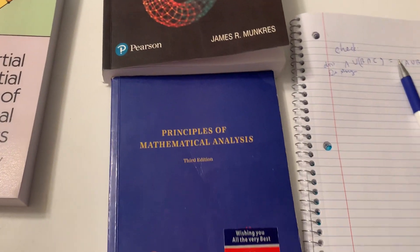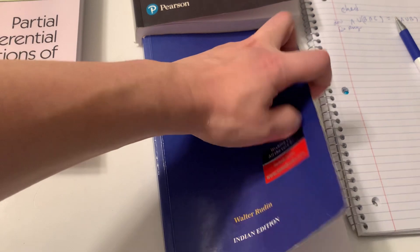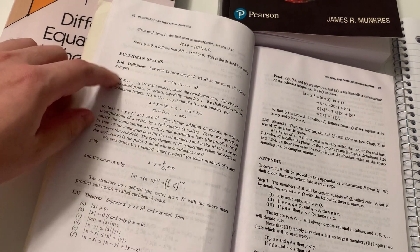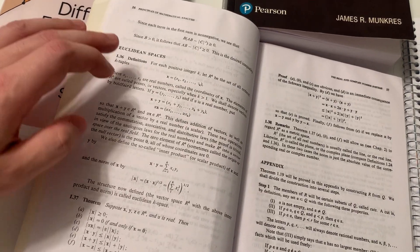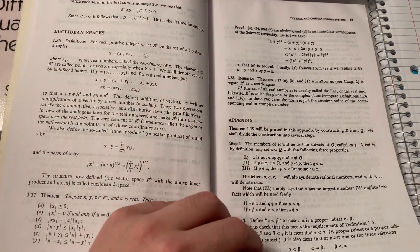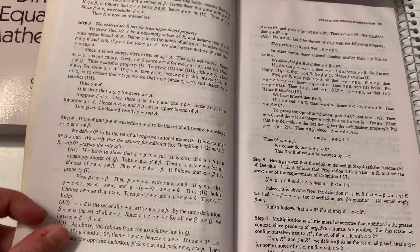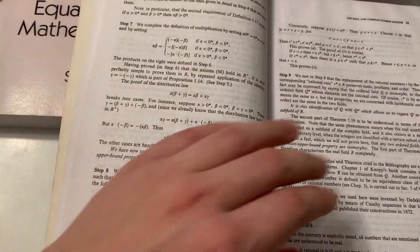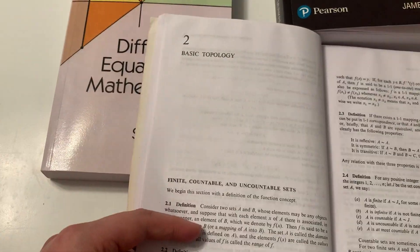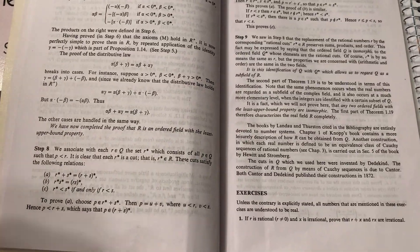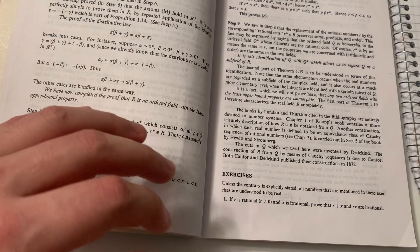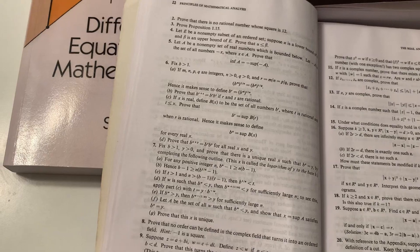And for Rudin's book on analysis, let's take a look at, for example, the first chapter. So this section is called the Euclidean space. As you can see, at the end of each section, there are no exercises. The exercises are all at the end of every chapter. Here. Here. And here's the next chapter. So there are also a lot of books that arrange exercises the same way that Rudin does. The exercises being at the end of each chapter.